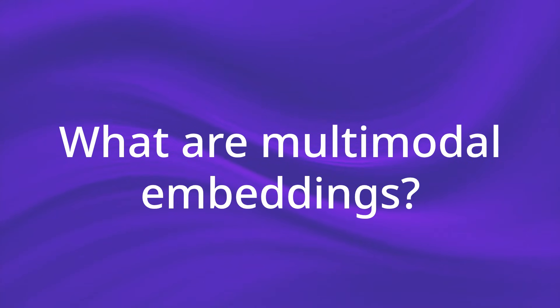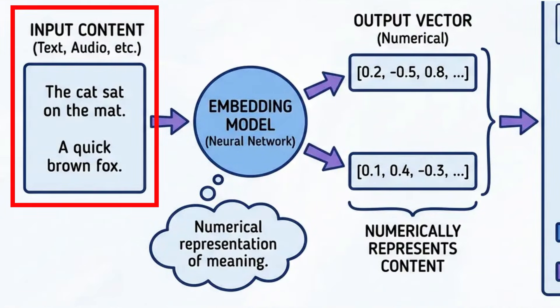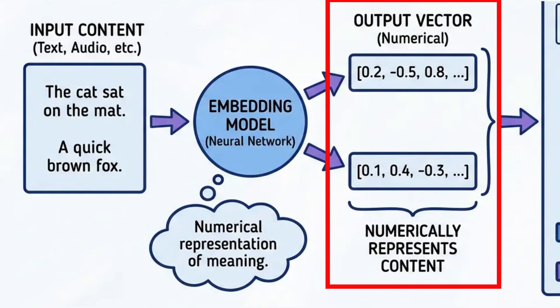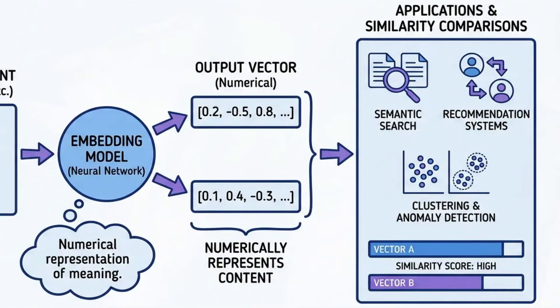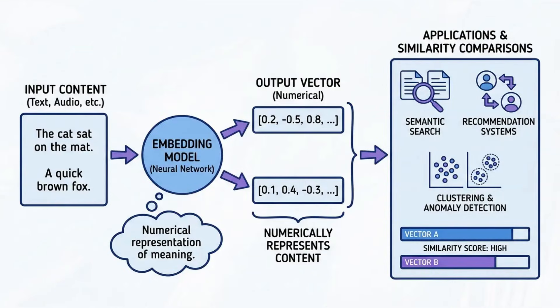Let's start with a quick refresher on what embeddings are. Embeddings are basically a numerical representation of meaning — we take content, pass it into the model, and it gives us a vector that numerically represents that content. This allows us to do similarity comparisons: instead of asking a model to compare two paragraphs directly, if we convert them to vectors it becomes much easier.